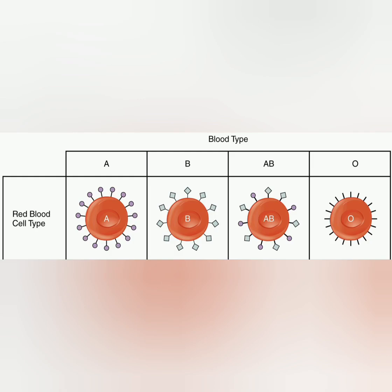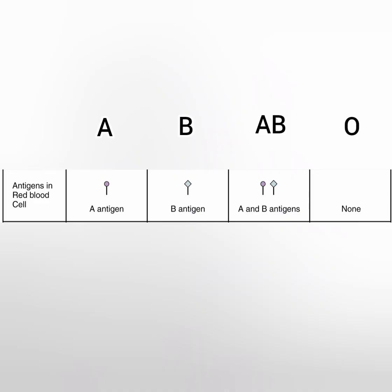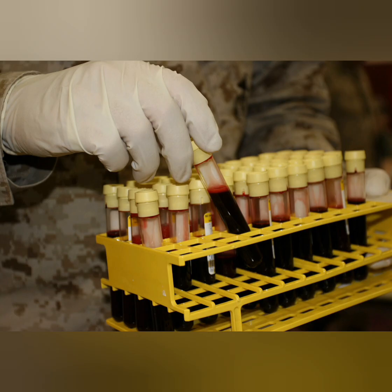The four main blood types are A, B, AB, and O. Blood type O can be given to any blood type, but it is not the only blood type that mixes. Blood type O contains no antigens, which is why it can mix with all blood types.